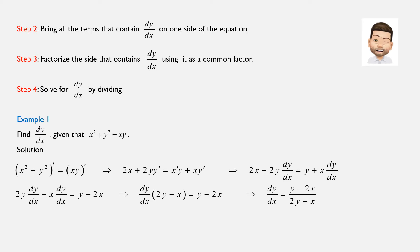Once we are done differentiating both sides with respect to x, we move to step two, where we bring all terms that contain dy over dx to one side of the equation. Next, in step three, we factorize that side using dy over dx as a common factor. And finally, in step four, we solve for dy over dx by dividing.